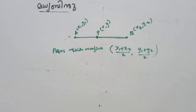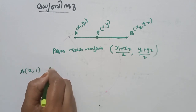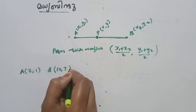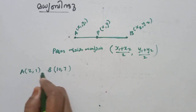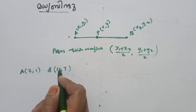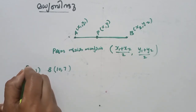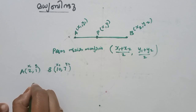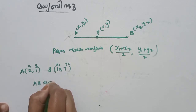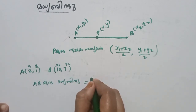That's why we have a problem. Let's take a look. A is (2, 1), B is (10, 7). Now we have to find the midpoint P. If we take a look, this is x1, y1. We have to apply the midpoint formula.